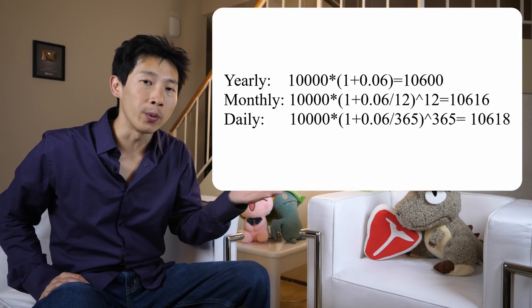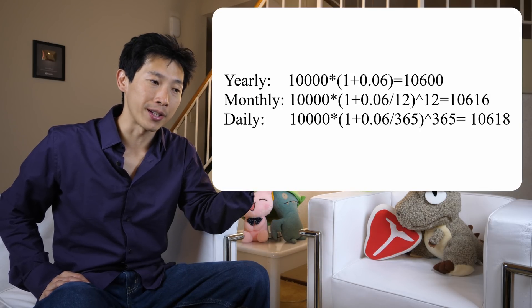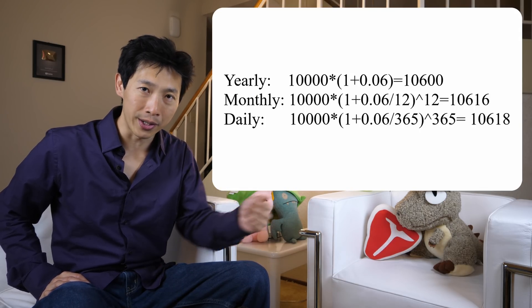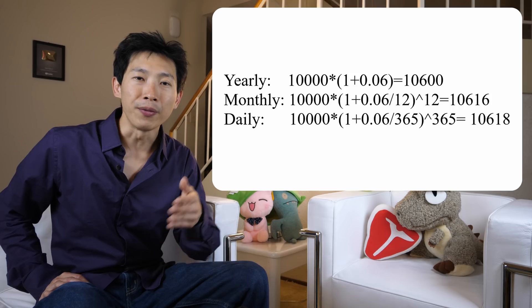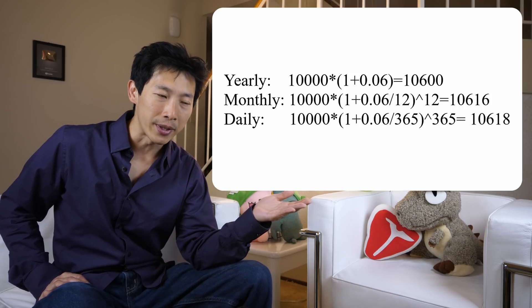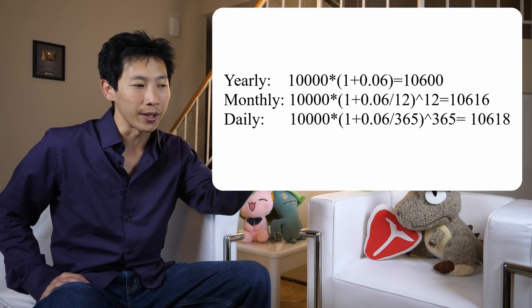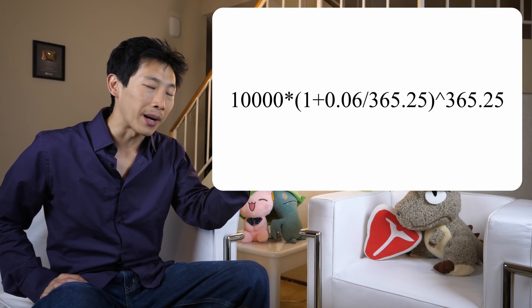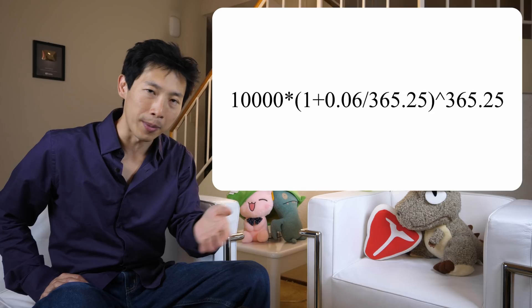Once you know the trick to it, if you want to compound it every single day, just divide it by 365. If you want to take into account leap years, you can go 6% divided by 365.25 or something like that.